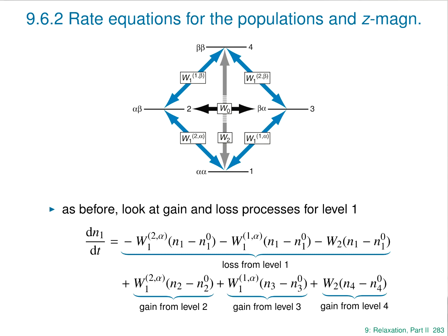We can describe how the populations of these energy levels change as a function of time using the same approach as for a single spin — looking at gain and loss processes, for example for level 1. Writing dN1/dt: the first term circled in red is a loss of population from level 1, with a minus sign and rate constant W1-alpha, written as the deviation from equilibrium. The next term is another loss term, and W2 is also a loss term from level 1. These three terms are all loss terms and are all negative.